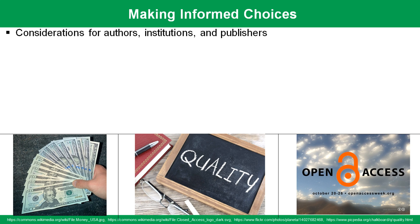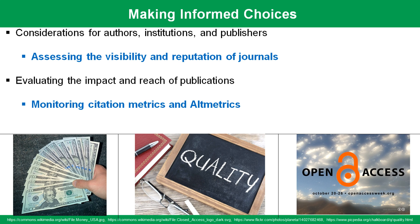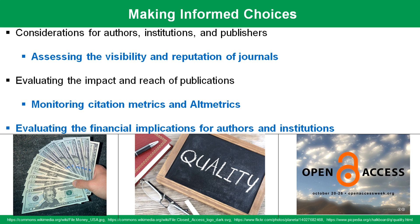Authors, institutions, and publishers must make informed decisions when navigating the scholarly publishing landscape. Evaluating the visibility and reputation of journals is crucial. Factors such as citation metrics, impact factors, and altmetrics provide valuable insight into journals' reach and influence. Financial considerations, including article processing charges and subscription fees, should be carefully weighed. Researchers and institutions should choose publishing avenues that align with their values, budget constraints, and commitment to promoting global knowledge sharing.